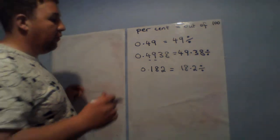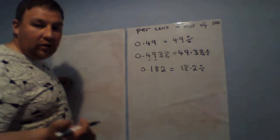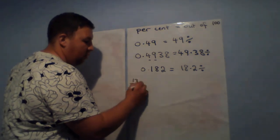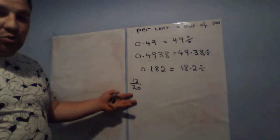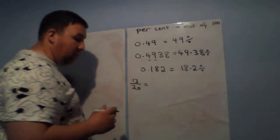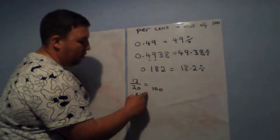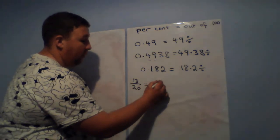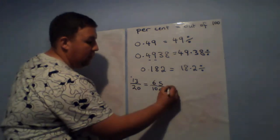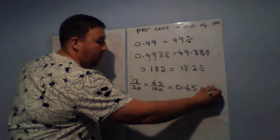To get a fraction into a decimal or a percentage — say we had 13 over 20 and we wanted to change this to a decimal first. We need to change that to over 100. To get 20 to 100, we multiply by five — so we multiply the 13 by five: that's 65 over 100. That is equal as a decimal to 0.65, or is equal to 65 percent.